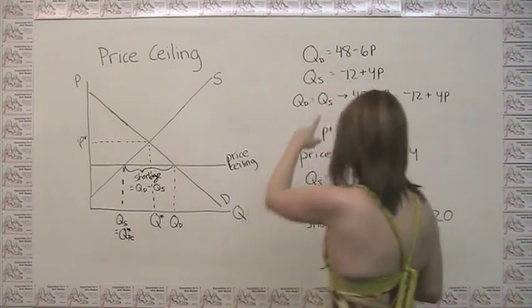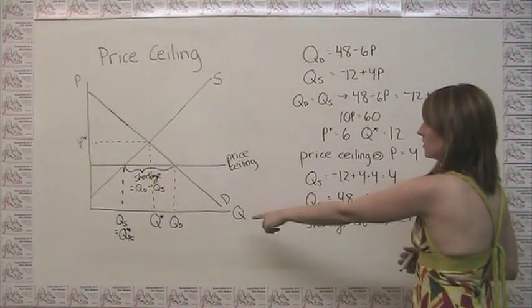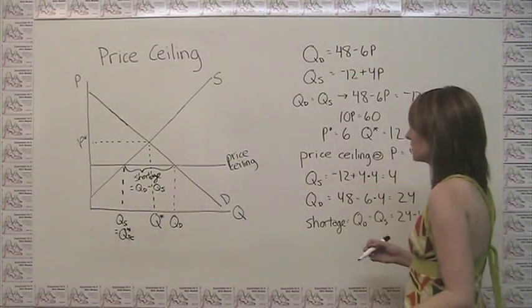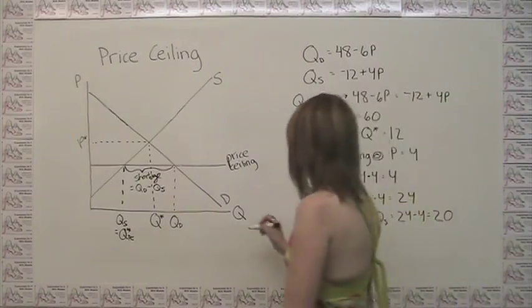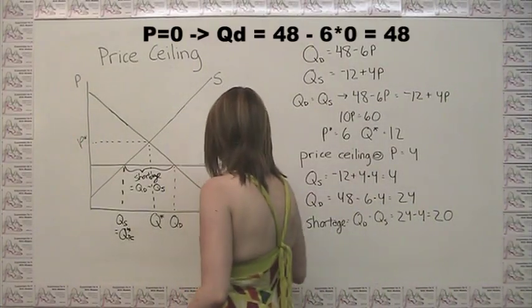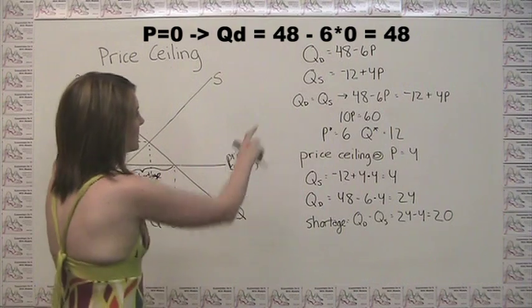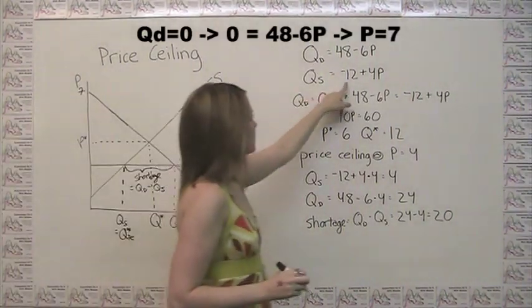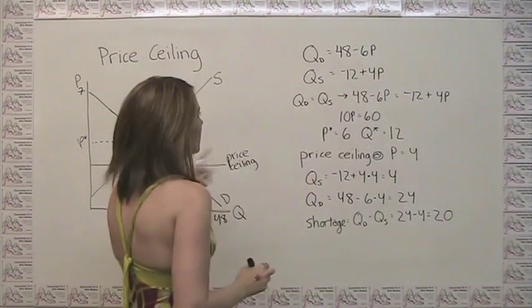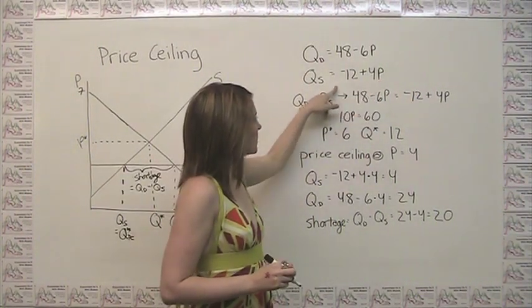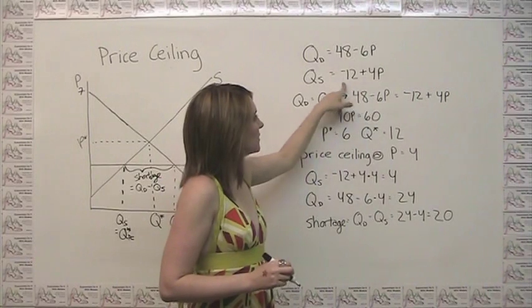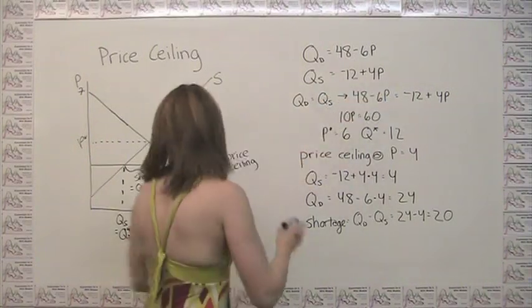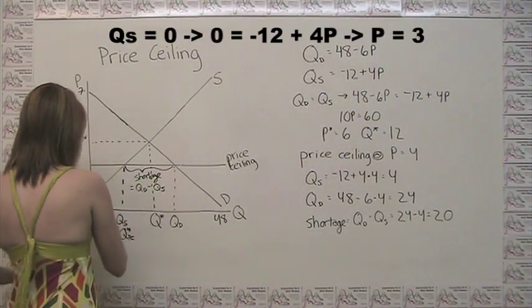Graphically then, we can say our quantity axis intercept is 48, and our price axis intercept is 7. And then for our supply curve, our intercept over here is where quantity supplied equals 0. So if negative 12 plus 4p equals 0, then price equals 3.